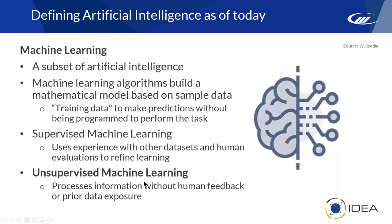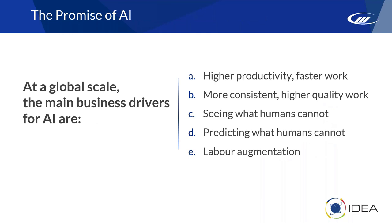Unsupervised machine learning has no human feedback loop. It goes through the file, teaches itself based on the other transactions, and flags outliers — and that's as far as it goes. Looking at AI at a global scale, people want higher productivity, faster work, more consistent work. AI can find things humans cannot — because it can look at millions or billions of transactions, it can find patterns that human beings simply wouldn't be able to detect.